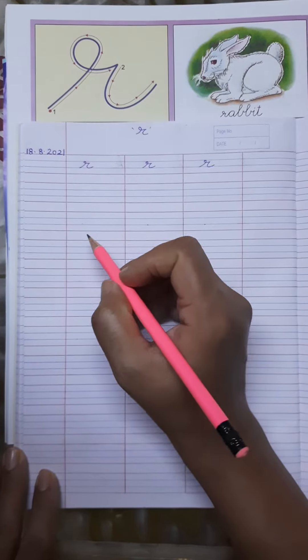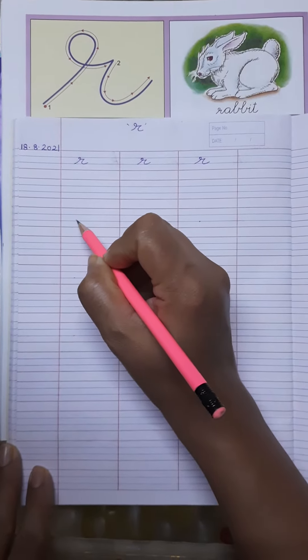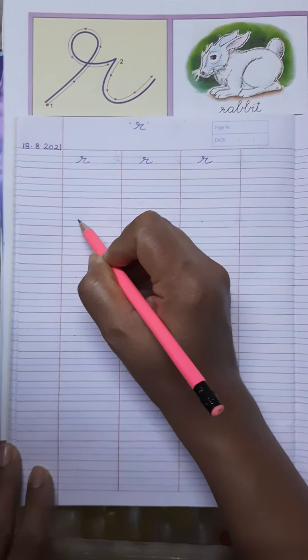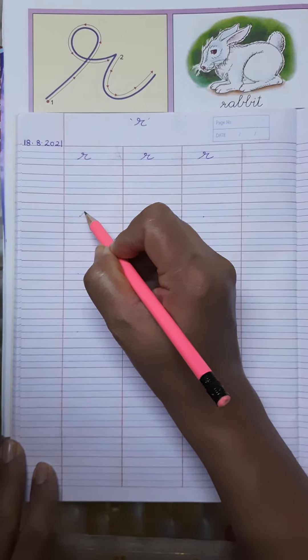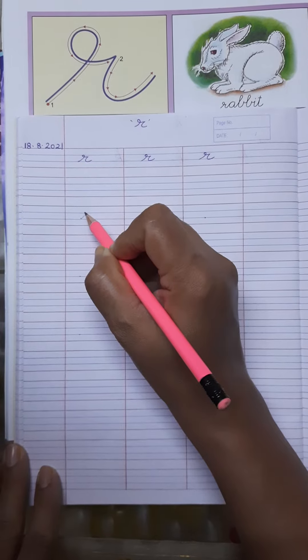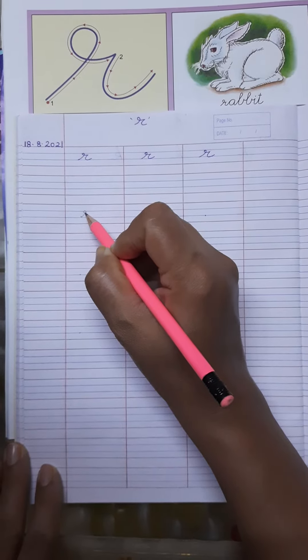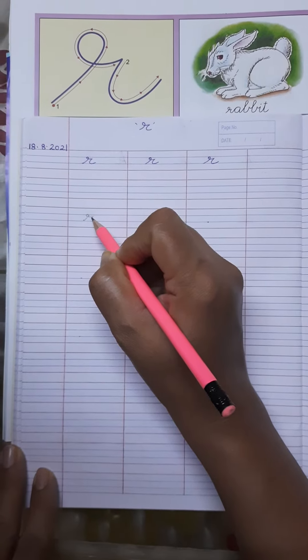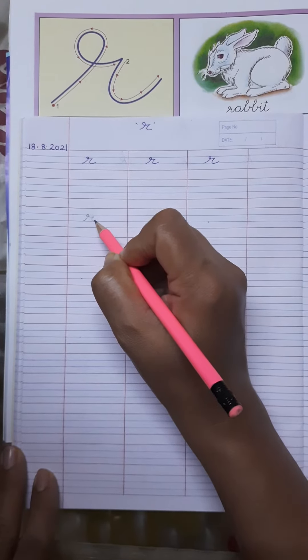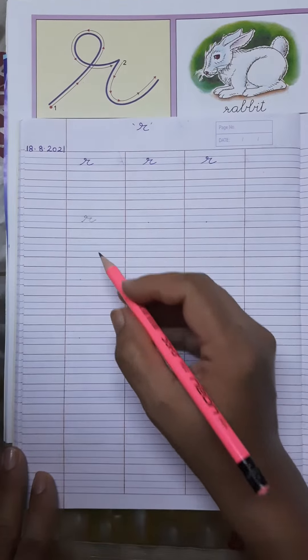Now put your pencil on the bottom blue line and take it to the upper blue line. From behind, make a small circle. Come outside. Make a sleeping line and touching the bottom blue line, make a curve like this. R.